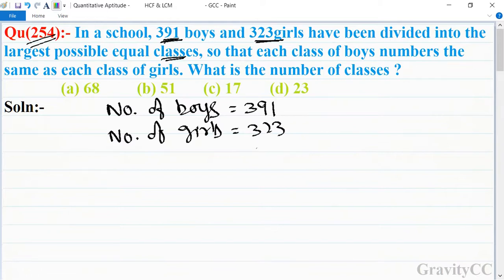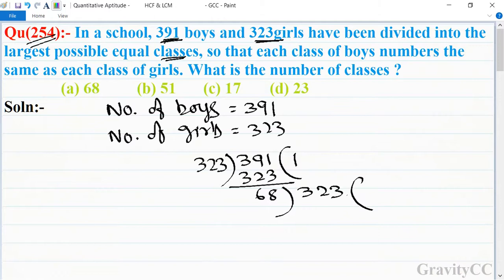We can see what to do here. 391 divided by 323 goes 1 time, 323. Then 68 goes into 323, 4 times, giving 272.